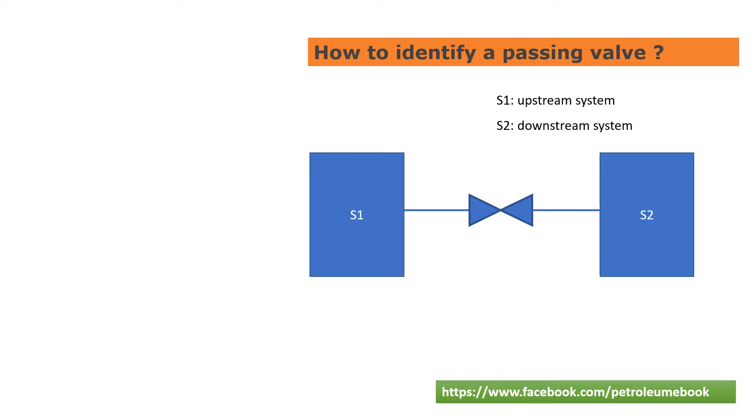For example, with the block valve in this figure, we have some steps to recognize whether this valve is passing or not. Step one: confirm the valve which needs to check passing is already fully closed.